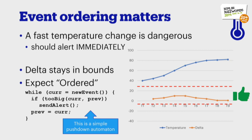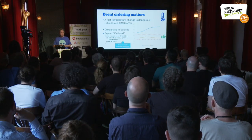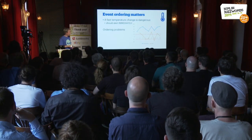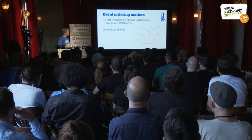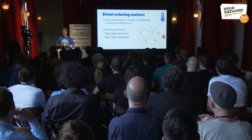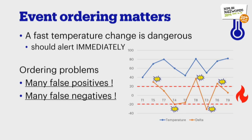I take the delta from these two measurements, and if it stays within bounds, all is fine. But if I introduce ordering problems — and all I did here is reshuffle the order — you get lots of problems. You get false positives and you get false negatives.